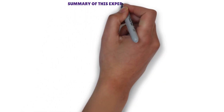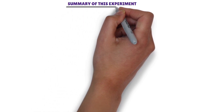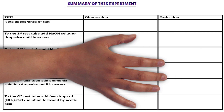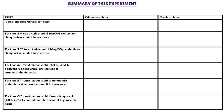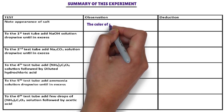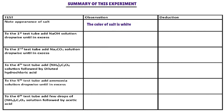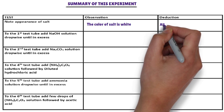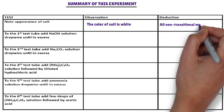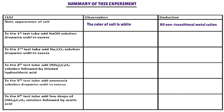Summary of this experiment. Observation: the color of salt is white. The white color of the salt indicates that the cation present in the salt is a non-transitional metal cation — for example, group 1 cation, group 2 cation, group 3 cation, group 4 cation, and so on.